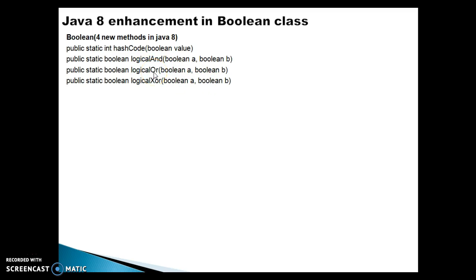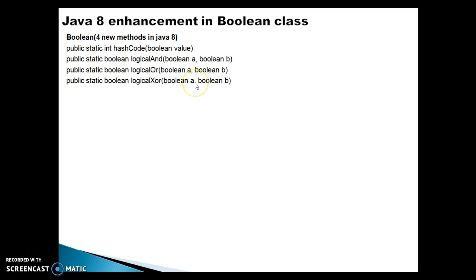Now logicalOr — if any one of the two operands is true, this is going to return true. The third method is logicalXOR. For logical XOR, if both operands are true, it returns false. If both parameters are false, it also returns false. If any one of them is true and the other is different, it returns true. That is the use of logical XOR.